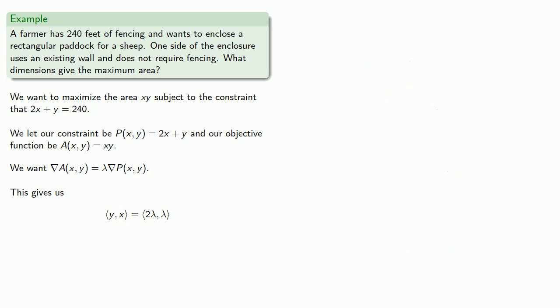Now to solve this, we'll compare the components. The first component y is equal to the first component 2 lambda. And similarly, the second component x is equal to the second component lambda. Now you might notice there's just one problem. We have three unknowns, x, y, and lambda, but only two equations. We need a third equation. Fortunately, we do have another equation that involves x and y, and that's our constraint equation. Now we have three equations and three unknowns, so we can solve.